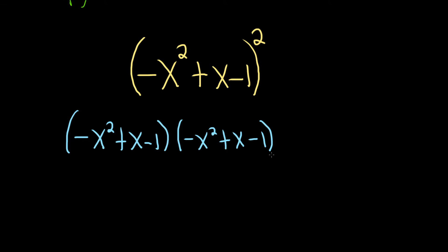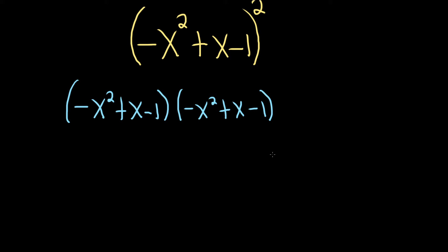And now we're just going to go ahead and distribute. So to do that, we're basically going to take each piece and just multiply it by the ones over here. So we'll start by taking x squared and multiply it by each of these.